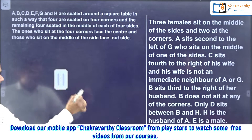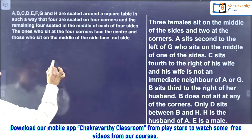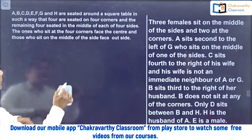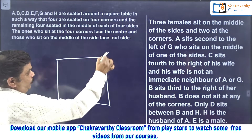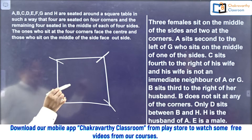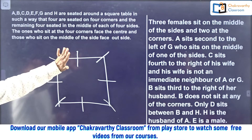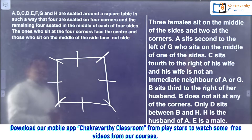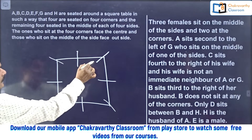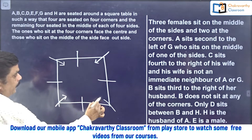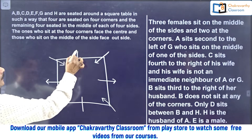Just draw a square here — square or rectangle, whatever it may be, it doesn't matter, you can take both as the same. So it's a square. 4 are seated on the corners: 1, 2, 3, 4. And 4 are on the middle of each of the sides. After that, they have given the directions as well. The ones who sit at the 4 corners face the center, and those who sit on the middle of each of the sides face outside. So corner people face inside toward the center, and those 4 on the middle of the sides are facing outside.